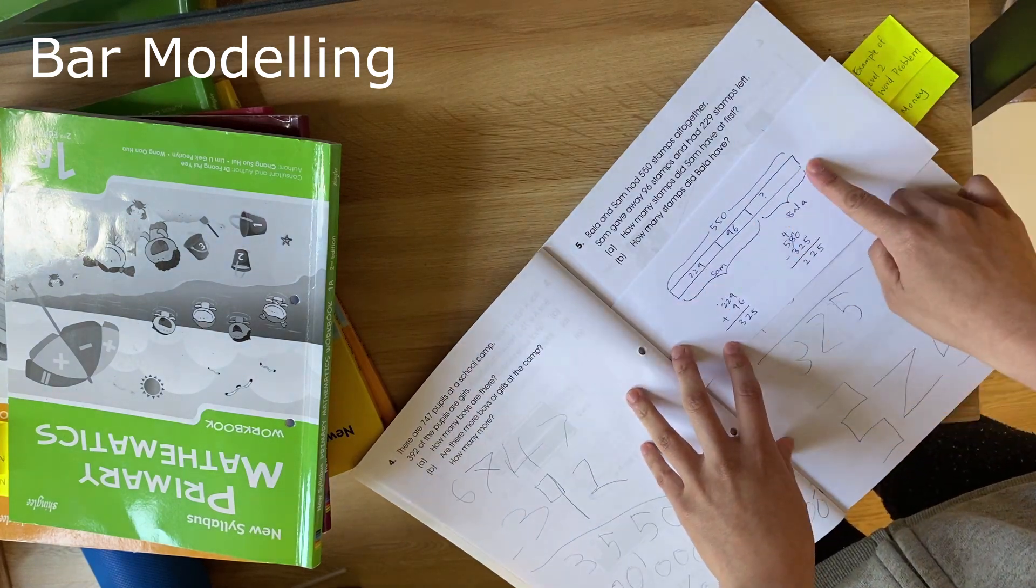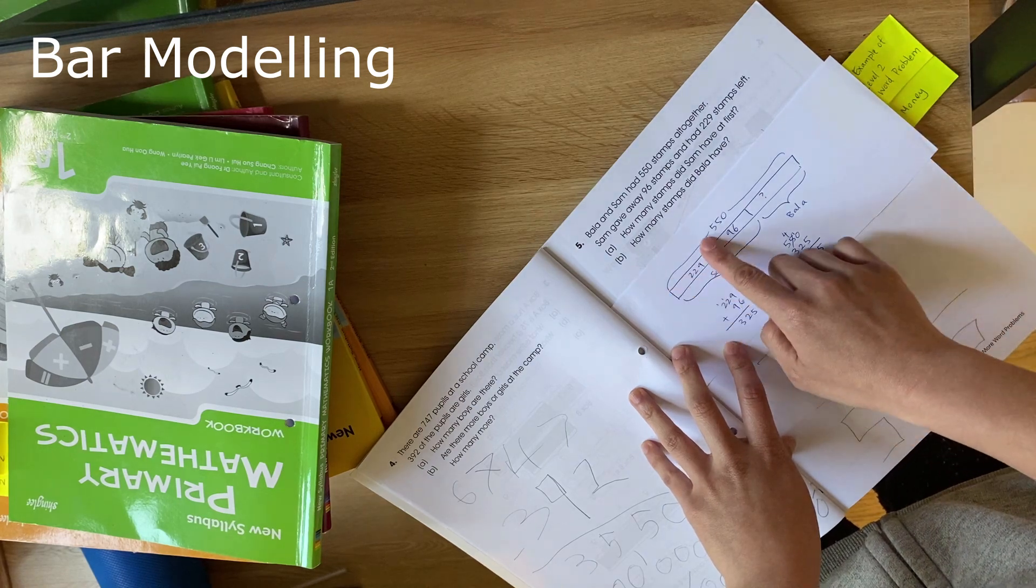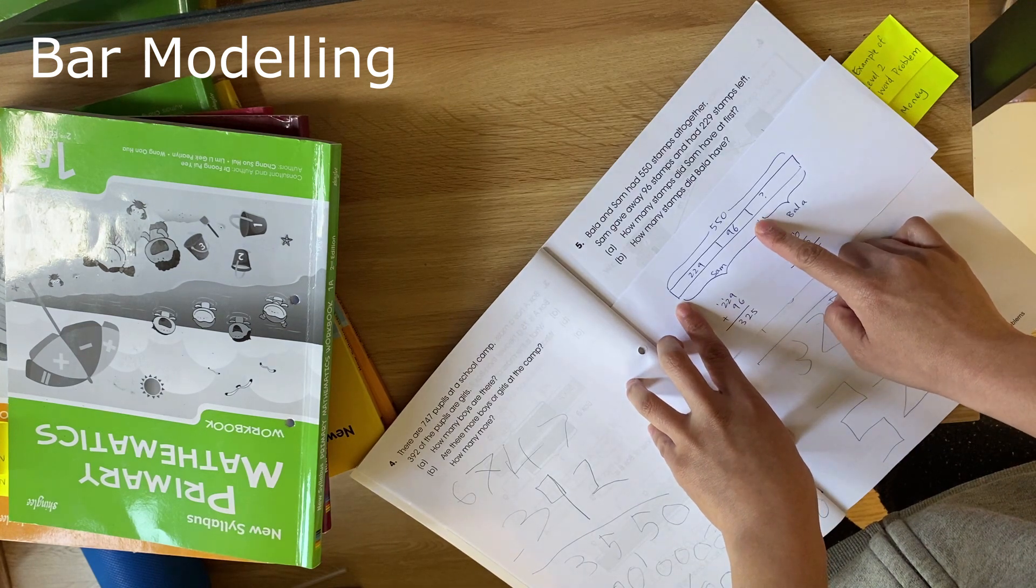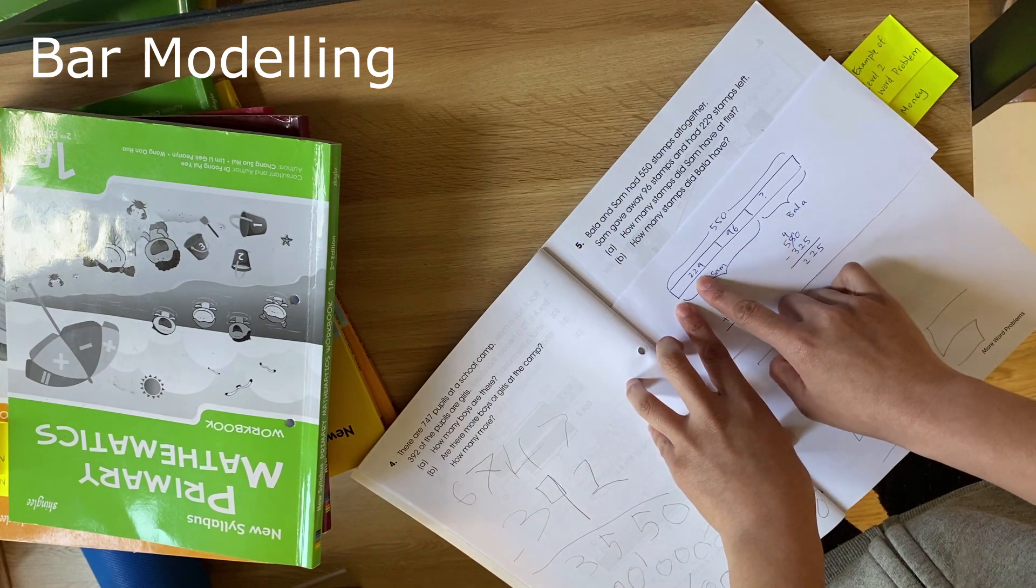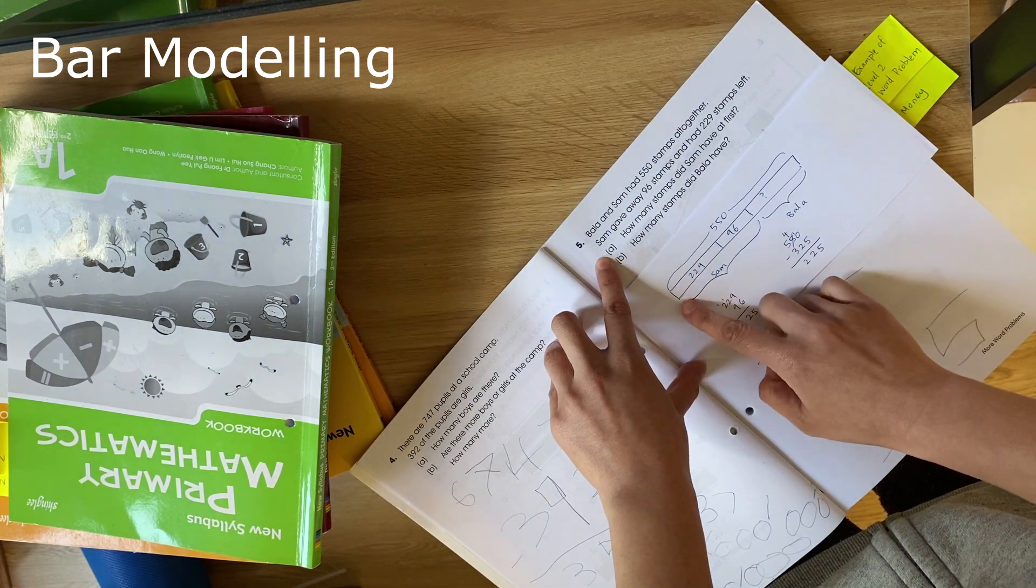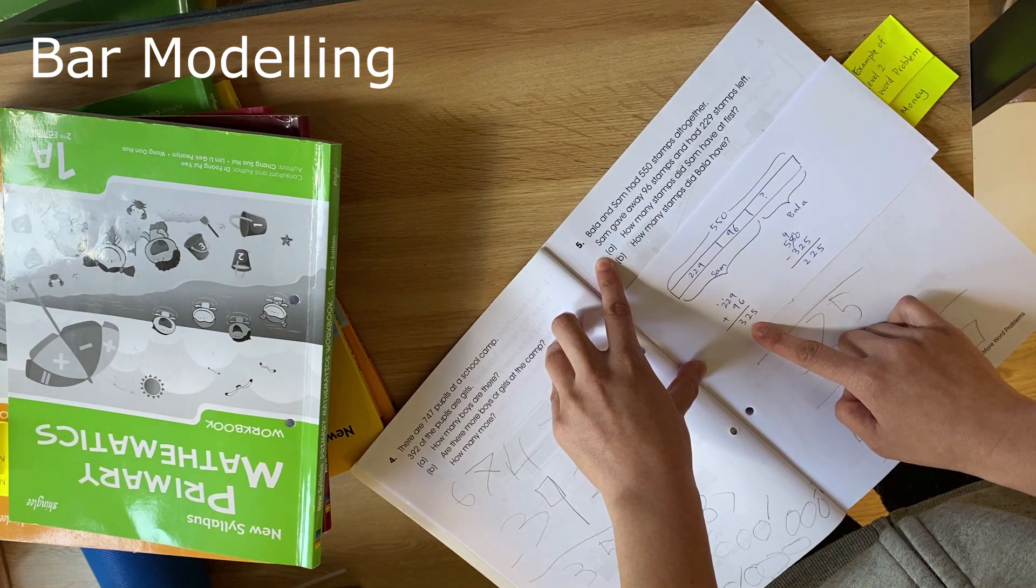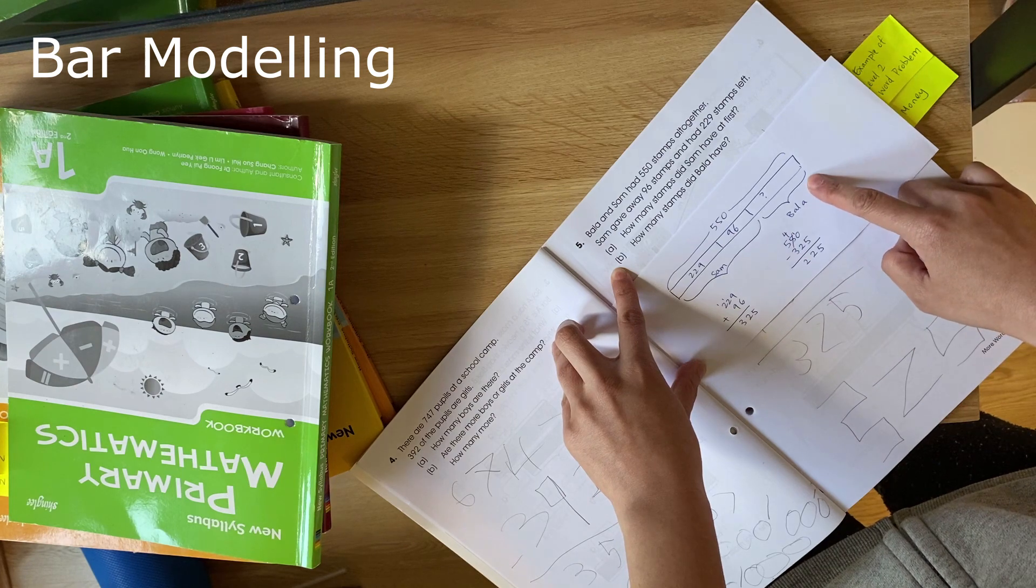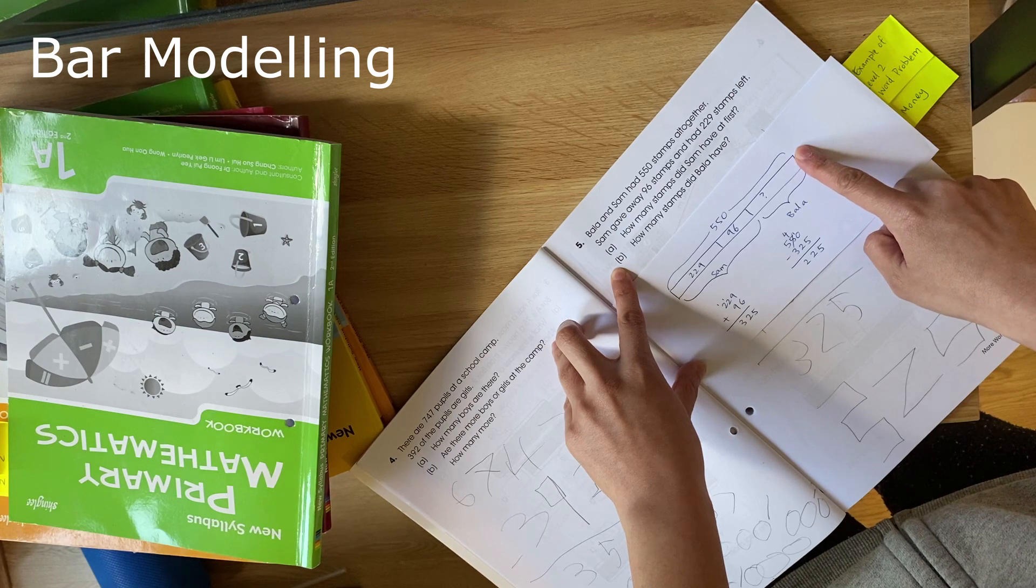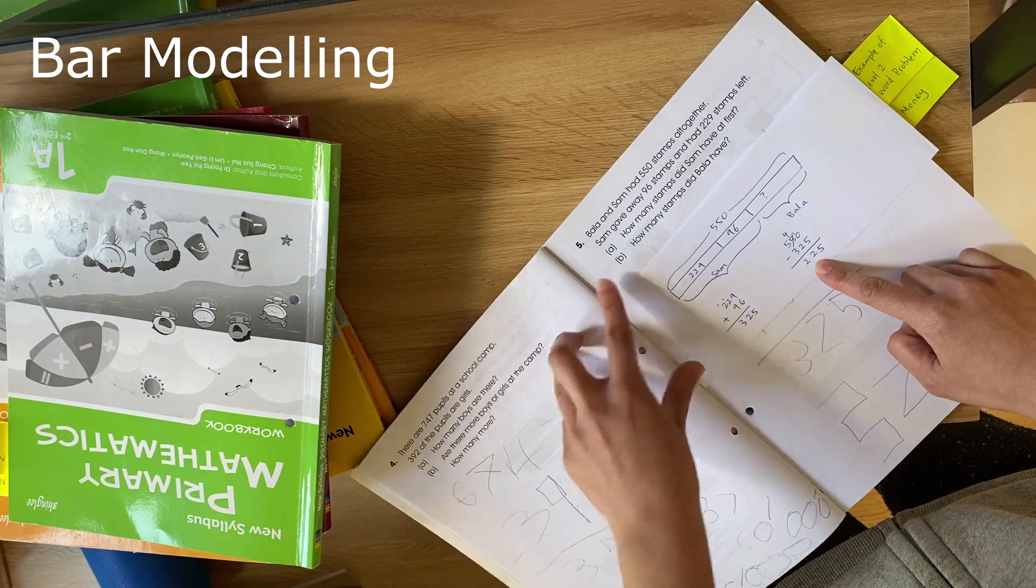So you draw your bar and you put all the information from here onto this bar. So they have 550 stamps altogether. This represents Sam's stamps. After he's given away 96, he's got 229 left. So you can work out A, how many stamps did Sam have? So you can add those two together, which gives you 325. Then you can work out how many stamps Bala had. So that will be 550, the full bar, take away 325, Sam's stamps, which gives you 225.